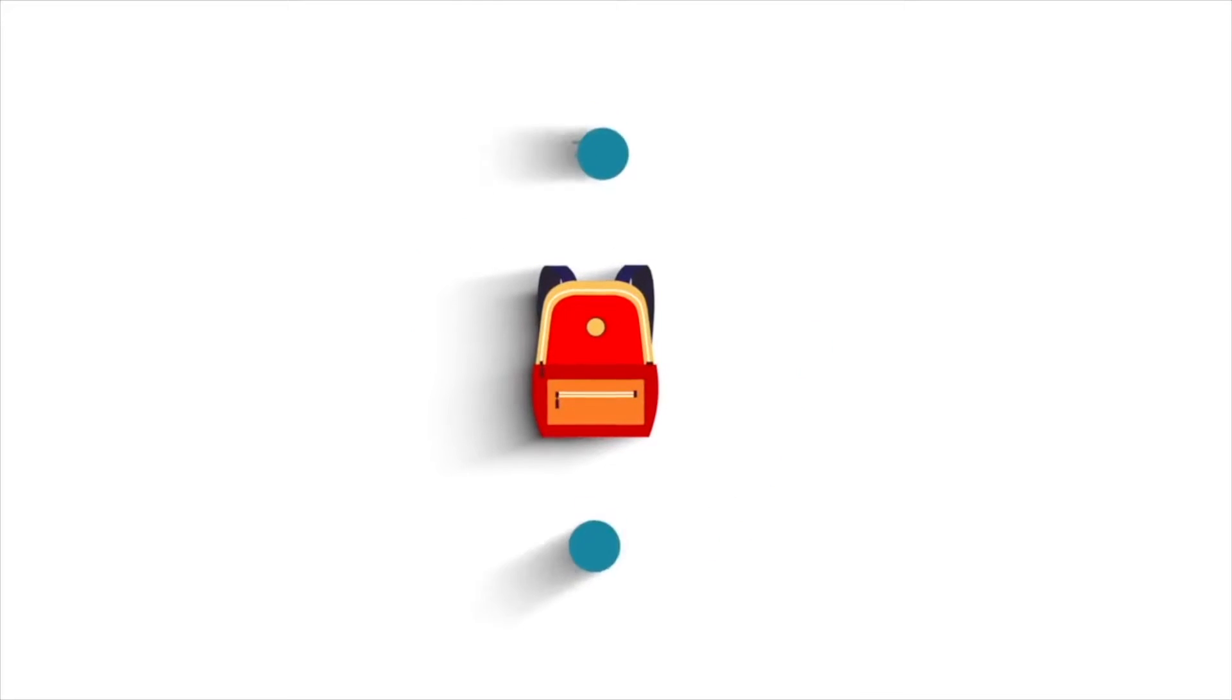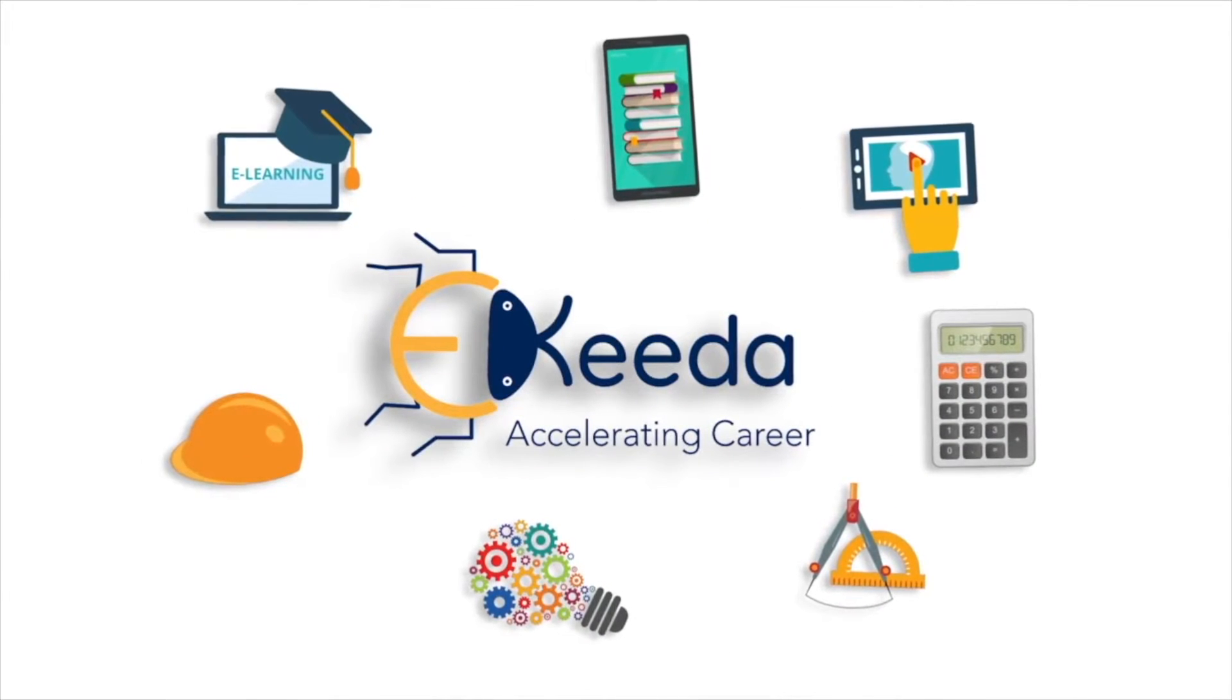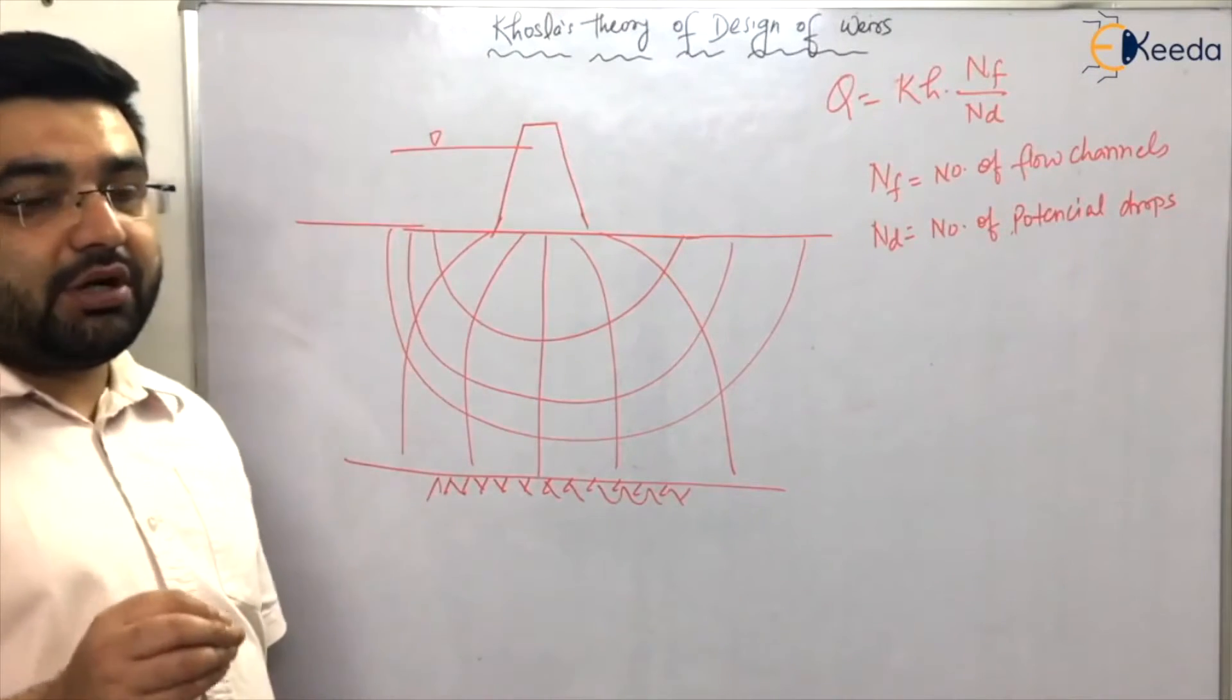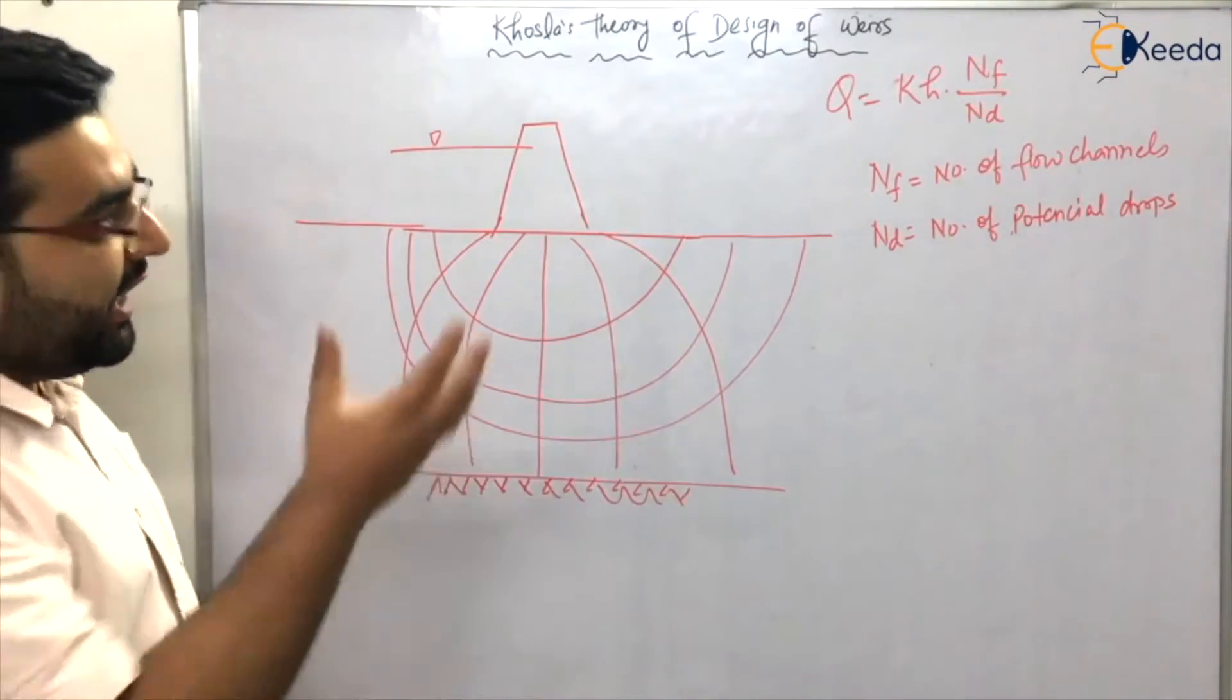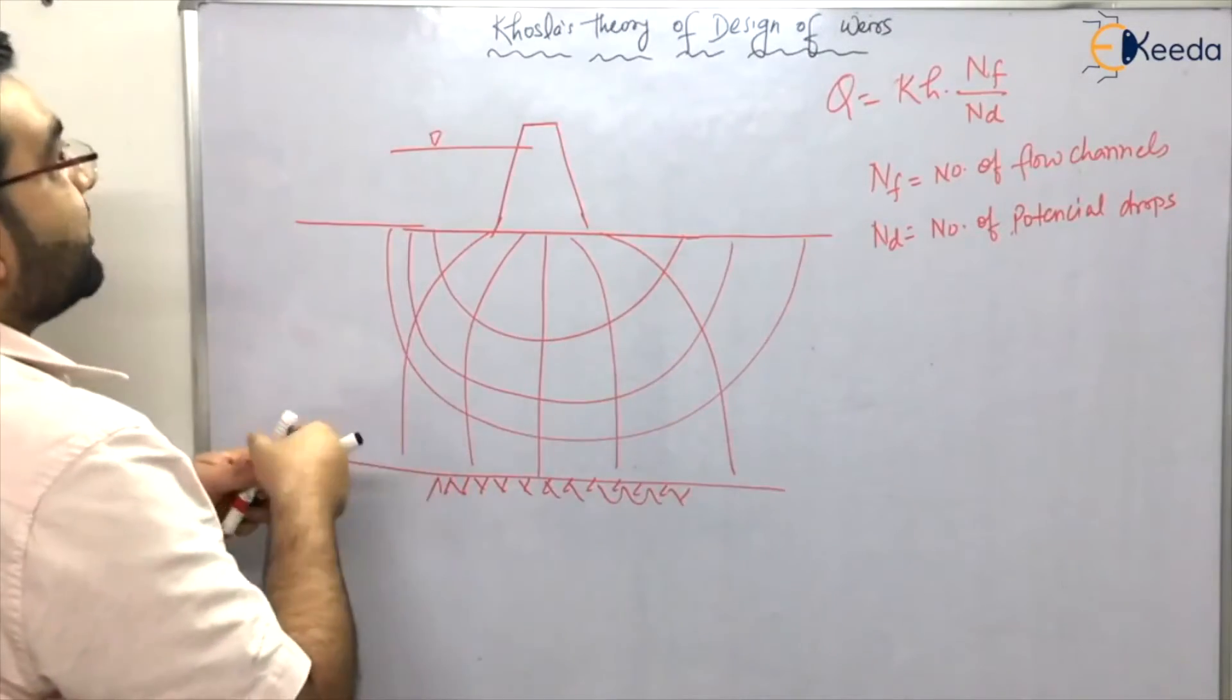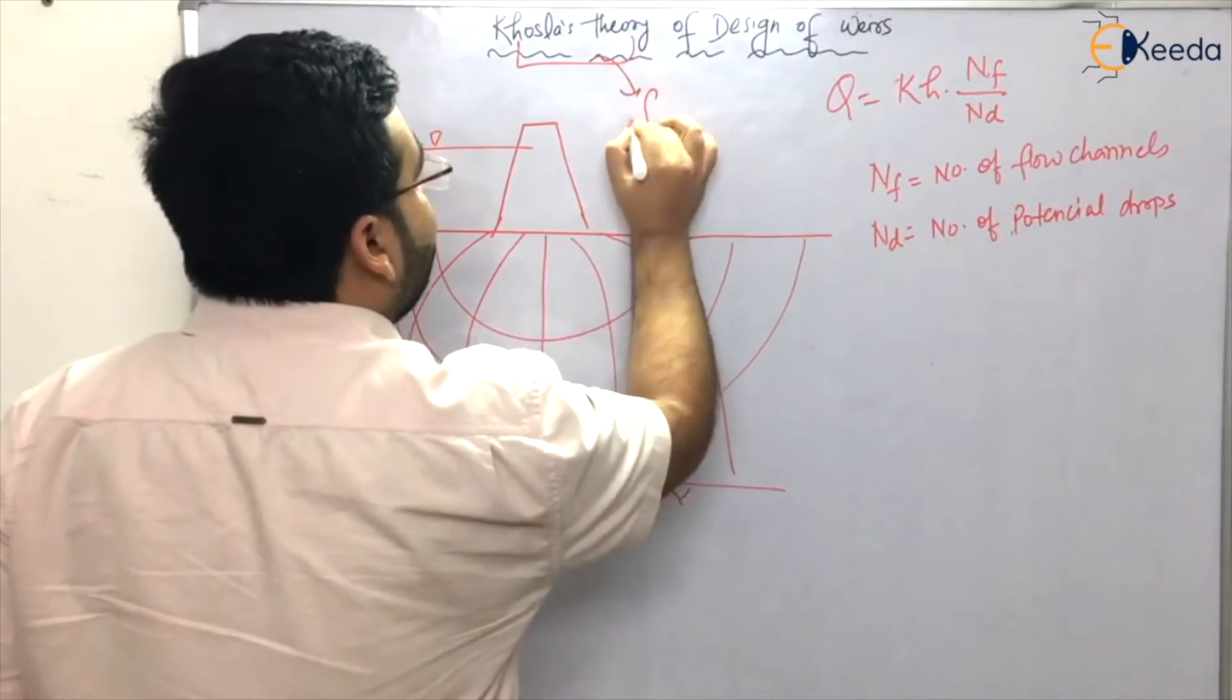Khosla's theory of design of weirs - if you remember your geotechnical engineering and fluid mechanics, it's actually the mixture of the two. In geotechnical engineering you must have heard about flow nets. Khosla's theory is actually based on flow nets.